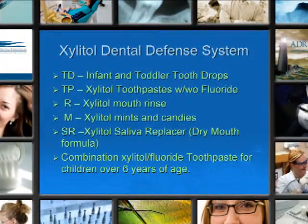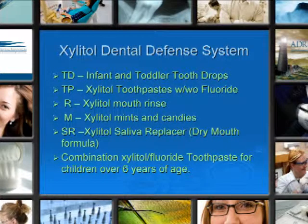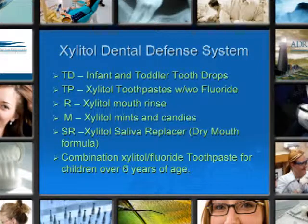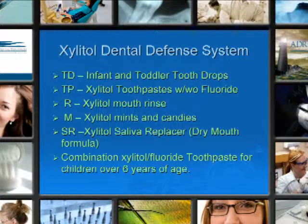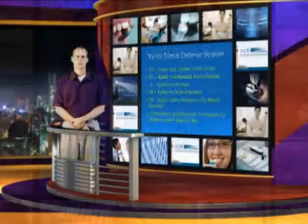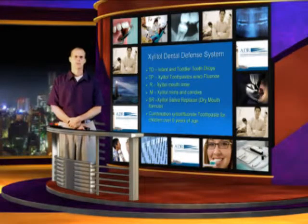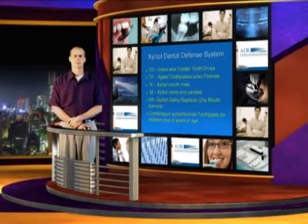A xylitol defense system should include products such as tooth drops, toothpaste, rinses, mints and candies, and xylitol salivary replacers. For children over six years old, combination xylitol-fluoride toothpaste is appropriate. We do not recommend fluoride toothpaste for children under six, so be careful with xylitol-fluoride toothpaste until they are over six years of age.